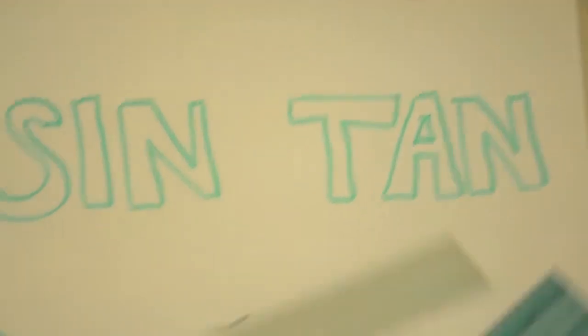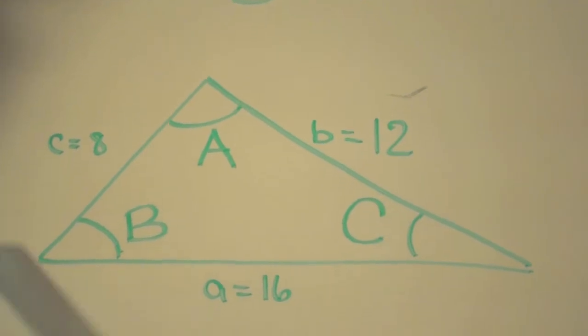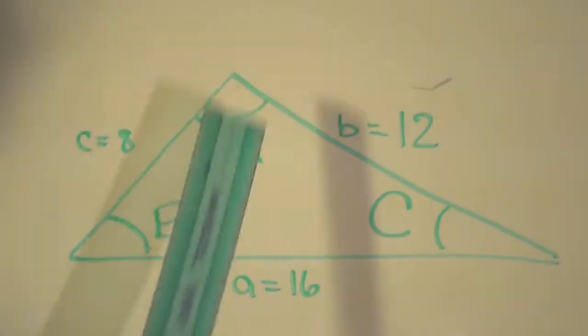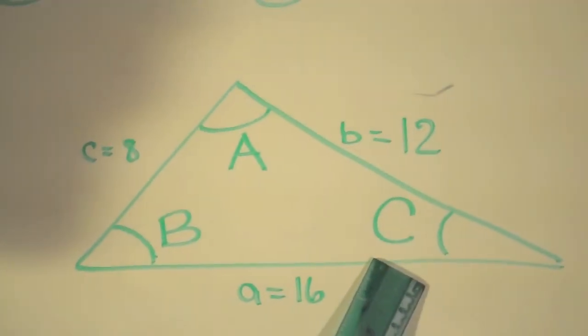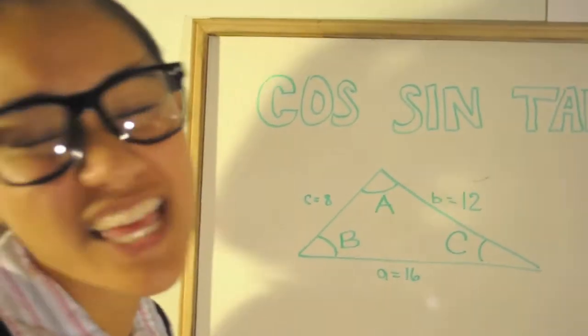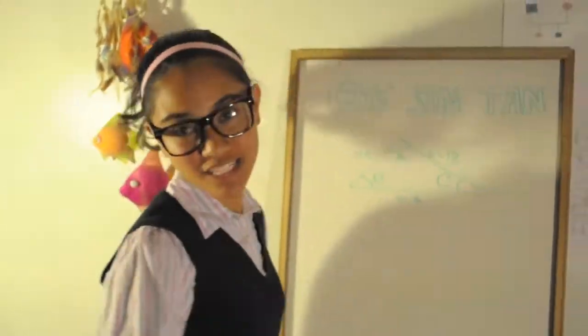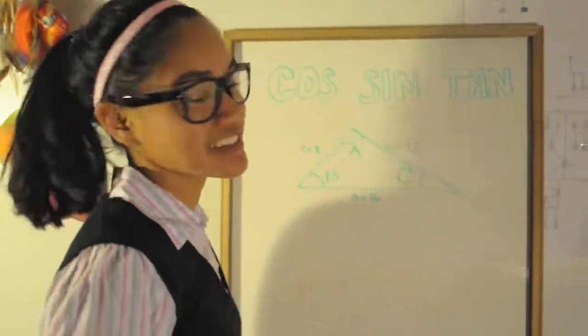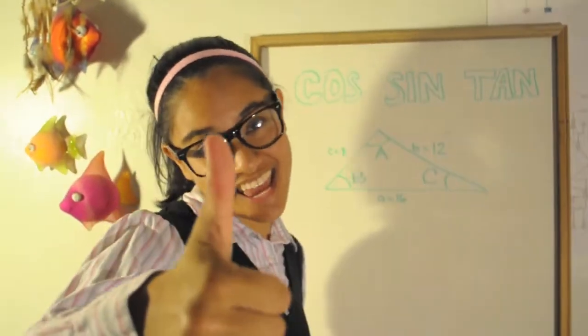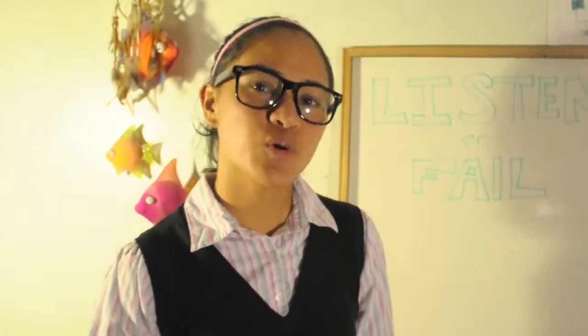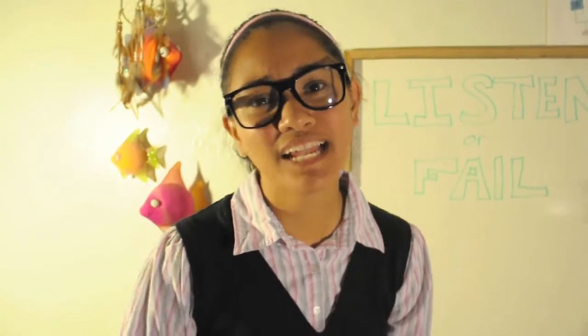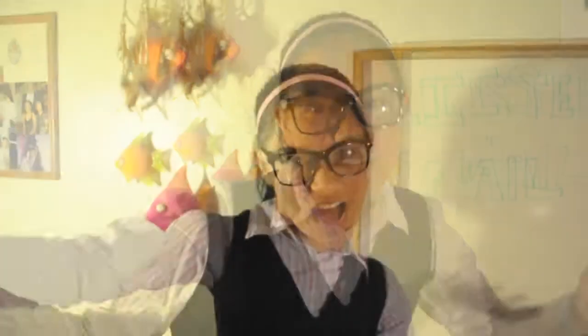You've got cosine, sine, and tangents. Use them to find angle A and B, and when you're done, find angle C. Rather than the reciprocals, just use those basic three. It's really that easy. So if you've listened, you should have no problem.